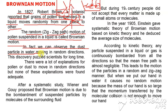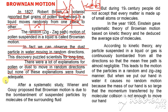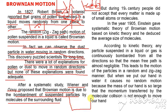We can also observe dust particles in water moving in a random direction — the dust particle inside water also moves in a random direction. This discovery puzzled scientists for a long time, and there were many explanations for why pollen or dust moves randomly, but none of these explanations were found adequate. After systematic study, Wiener and Guy proposed that Brownian motion is due to the bombardment of suspended particles by molecules of the surrounding fluid.